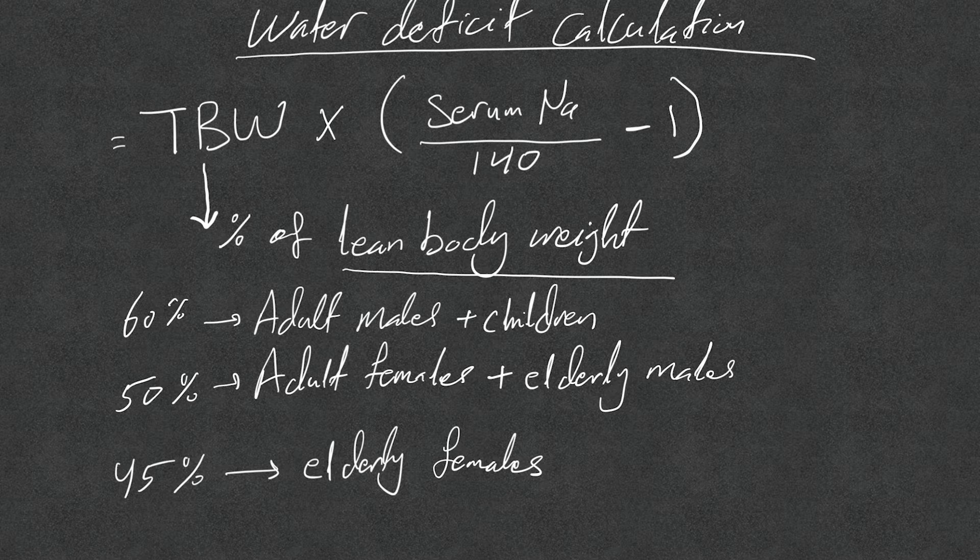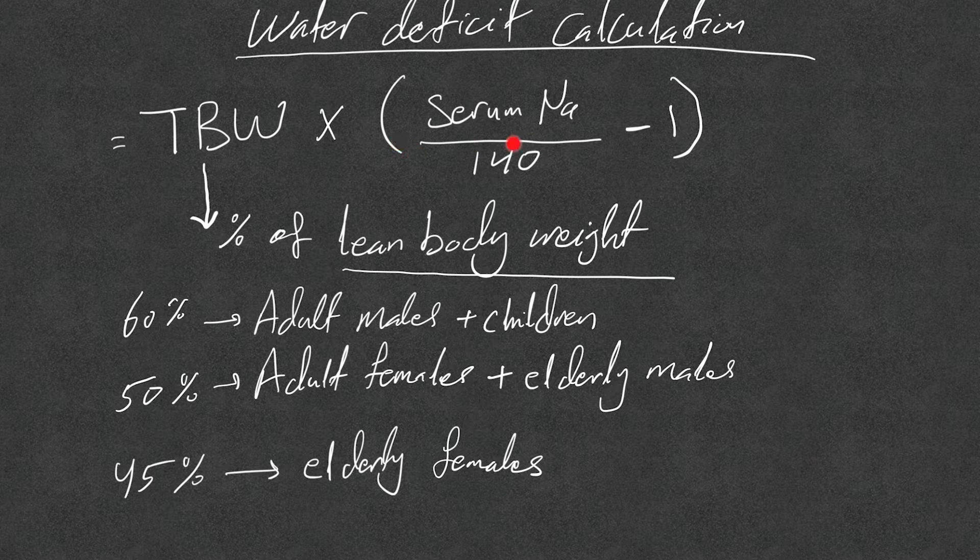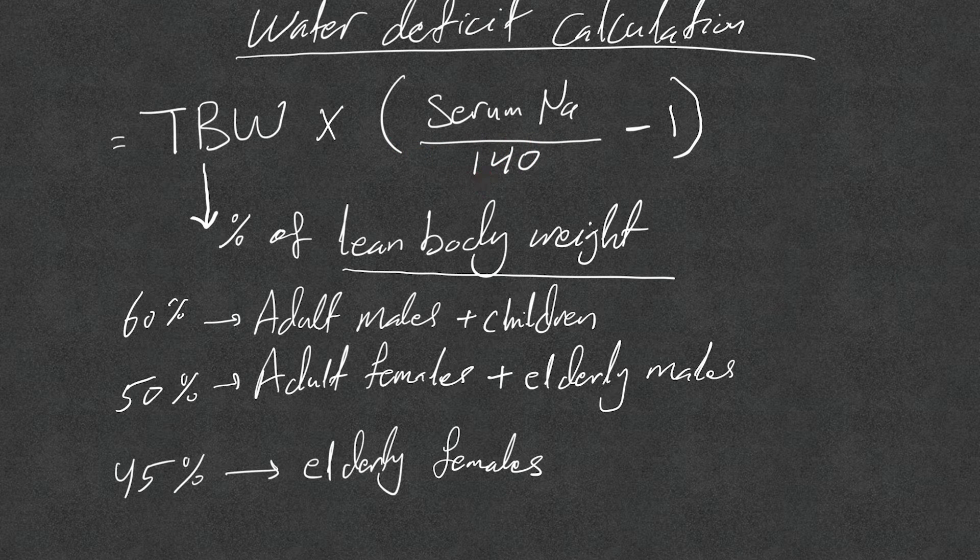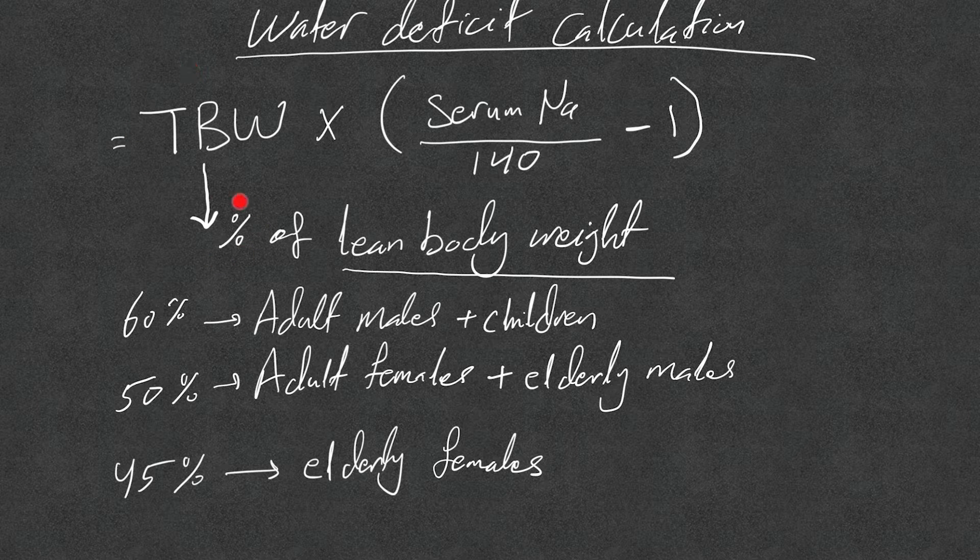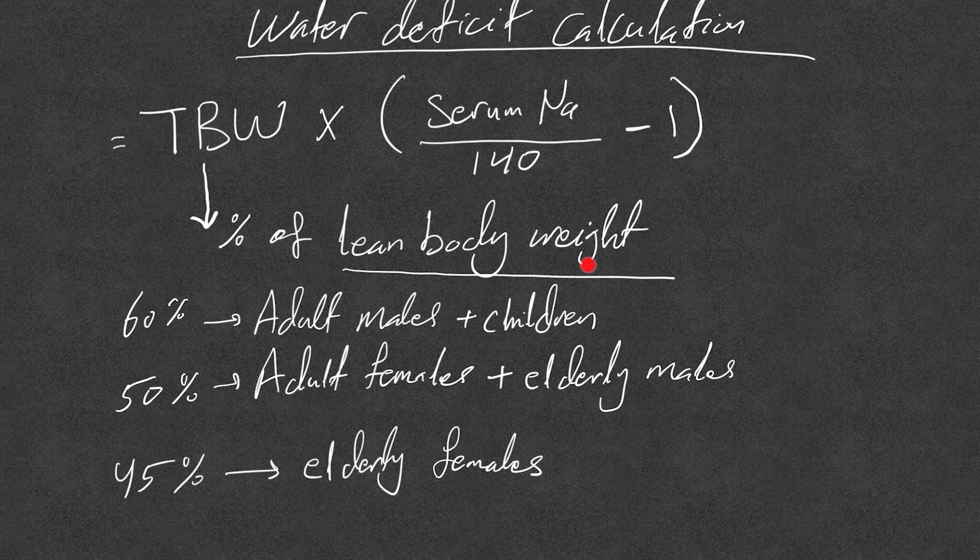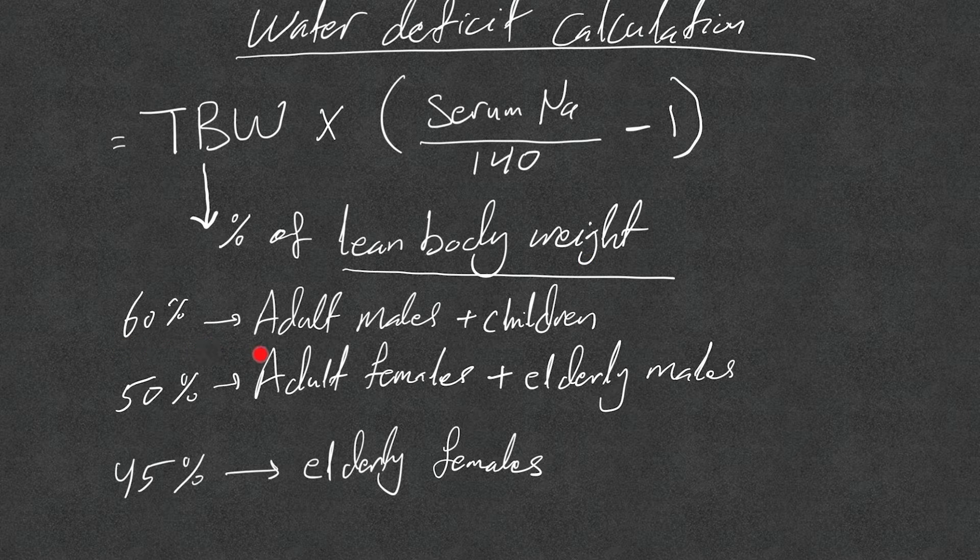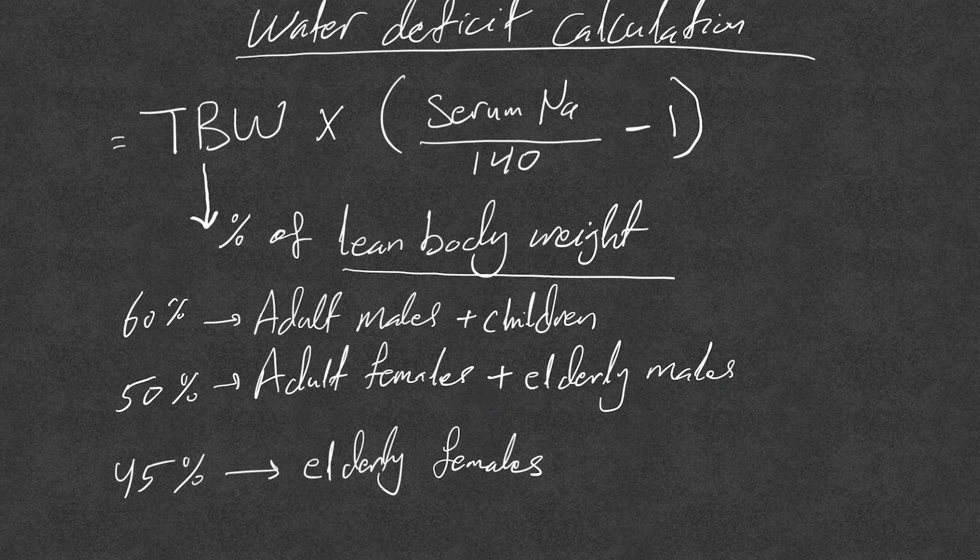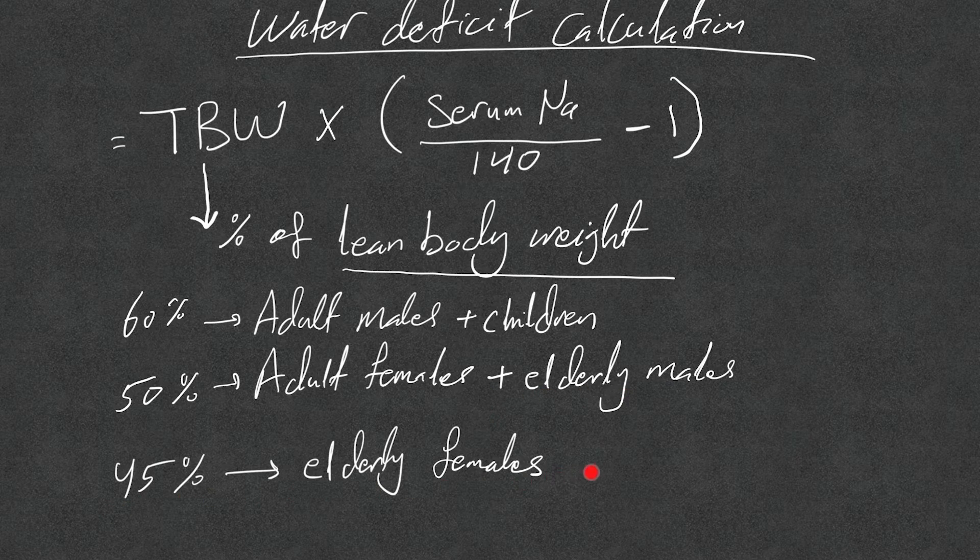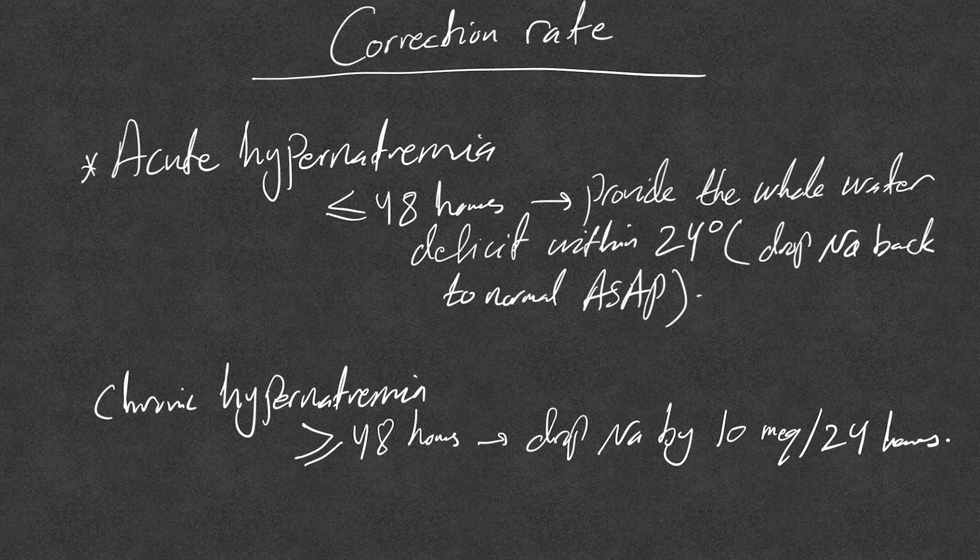Now water deficit calculation: all of you know this equation, the total body water multiplied by serum sodium divided by 140, which is normal serum sodium we consider, minus one. And the total body water is a percentage of the lean body weight, not the actual body weight, remember that. So it's 60 percent in adult males and children, 50 percent in adult females and elderly males, and 45 percent in elderly females.